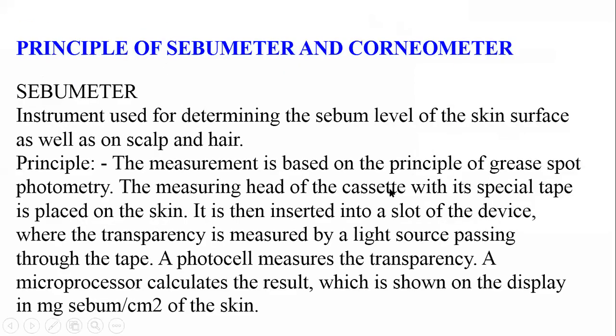Now we will see regarding the principles of sebum meter and corneometer. These are the instruments which are utilized for the determination of the skin conditions. The first instrument is called the sebum meter, which will measure the level of sebum in the skin. Nowadays many cosmetologists as well as dermatologists are using the support of these sebum meters for determination of the exact condition of the skin. The principle behind this instrument is that it measures the sebum level on the basis of grease spot photometry.